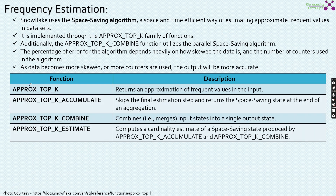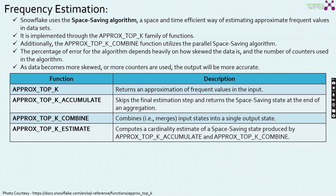These are the functions available within frequency estimation. APPROX_TOP_K returns the approximation of frequent values in the input. APPROX_TOP_K_ACCUMULATE skips the final estimation step — same as discussed previously. APPROX_TOP_K_COMBINE combines both states into a single output state. Finally, APPROX_TOP_K_ESTIMATE computes the cardinality estimate for the space saving state produced by APPROX_TOP_K_ACCUMULATE and APPROX_TOP_K_CONSUME.